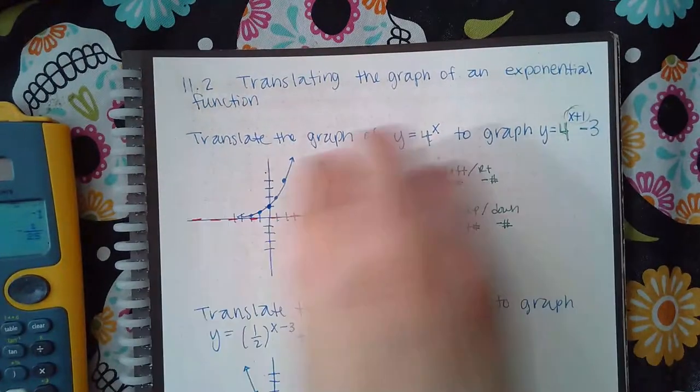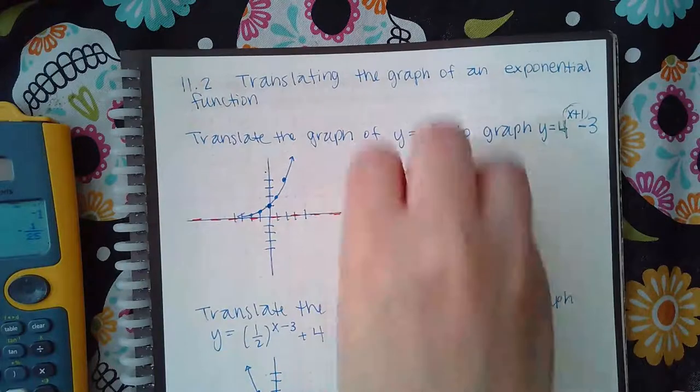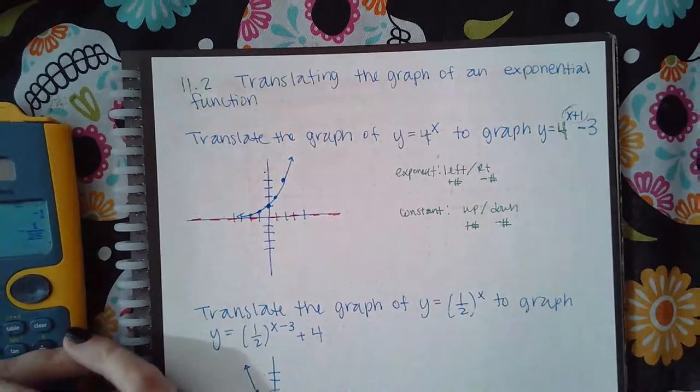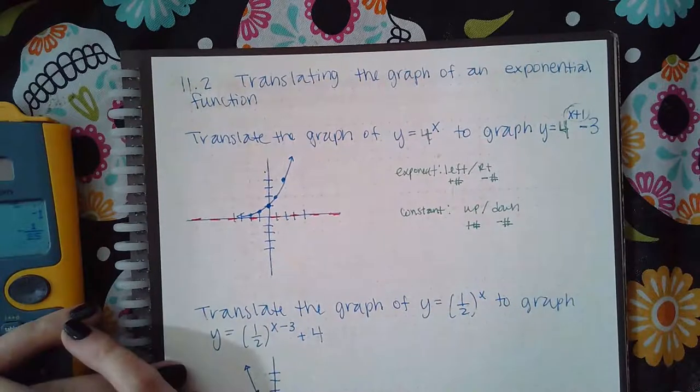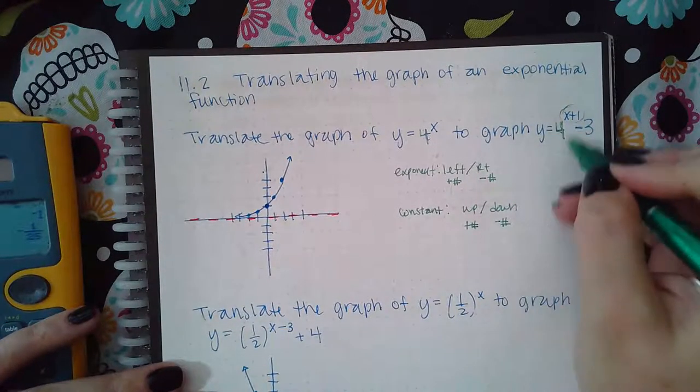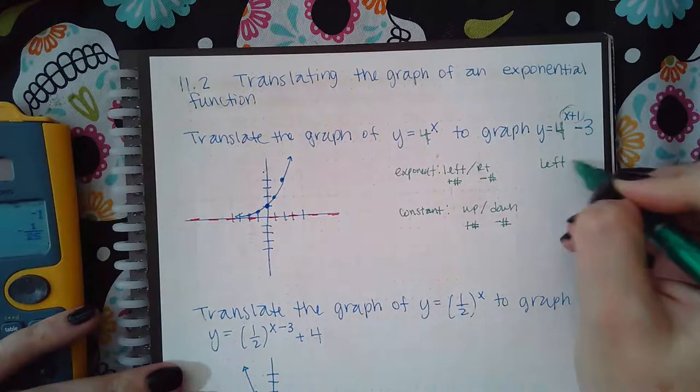When you grab it, it's going to automatically move the whole thing including the asymptote. For mine, I need to be shifting it to the left one unit.